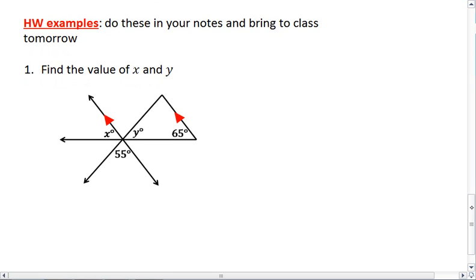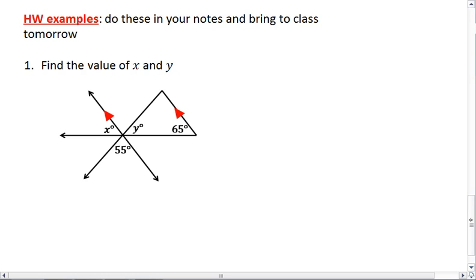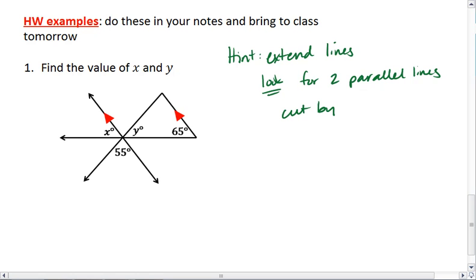Okay, your homework example is a little easier than the one we just tried. In this example, I want you to find the value of x and y. The only thing you can assume is what you are given in the picture and those are the two parallel lines as marked. A helpful hint, extend lines and look for two parallel lines cut by a transversal. We'll go over this example in class.